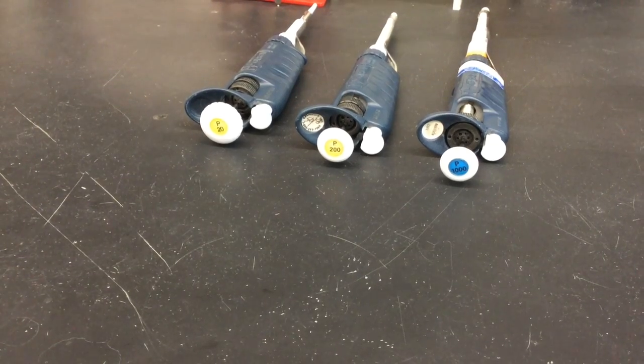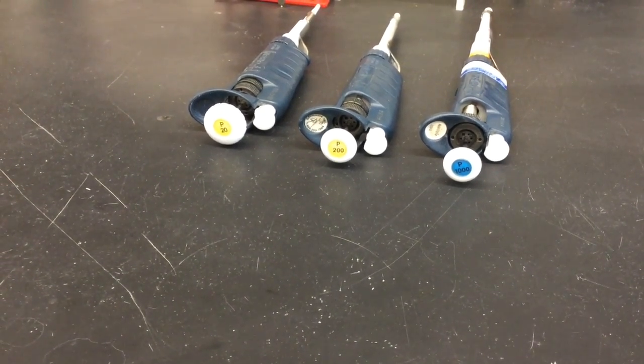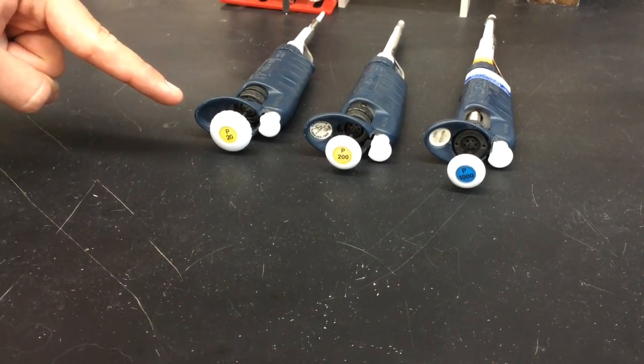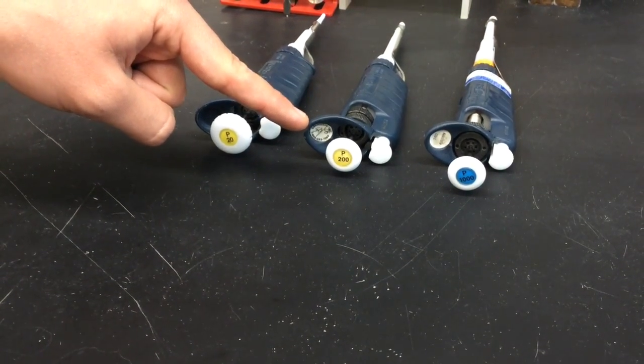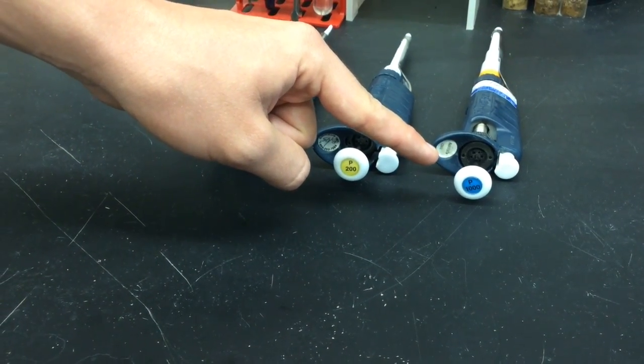These instruments come in several sizes which are capable of pipetting different ranges of volumes. The most common are the P20 which can deliver 2 to 20 microliters, the P200 which can deliver 20 to 200 microliters, and finally the P1000 which can deliver 200 to 1000 microliters.